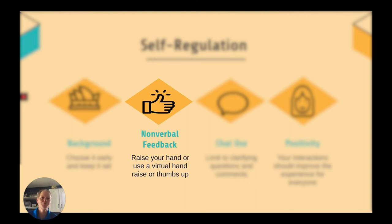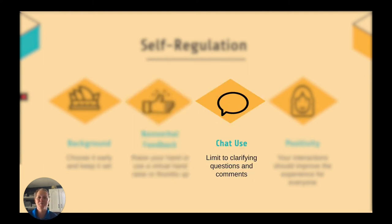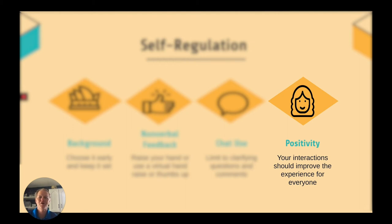Next is nonverbal feedback, because we don't want to be interrupting the host or whoever's presenting. You may want to ask questions at times, and there are options where you can raise a virtual hand or give a virtual thumbs up, so make sure you're aware of the options you have for nonverbal feedback. Chat can also be a great feature in an online setting because you can ask clarifying questions and really enrich the discussion. But make sure in the chat that we're limiting our comments to those that are going to clarify and help the session be productive, and that we're being positive with our comments. Any interactions we have should improve the experience for everyone.